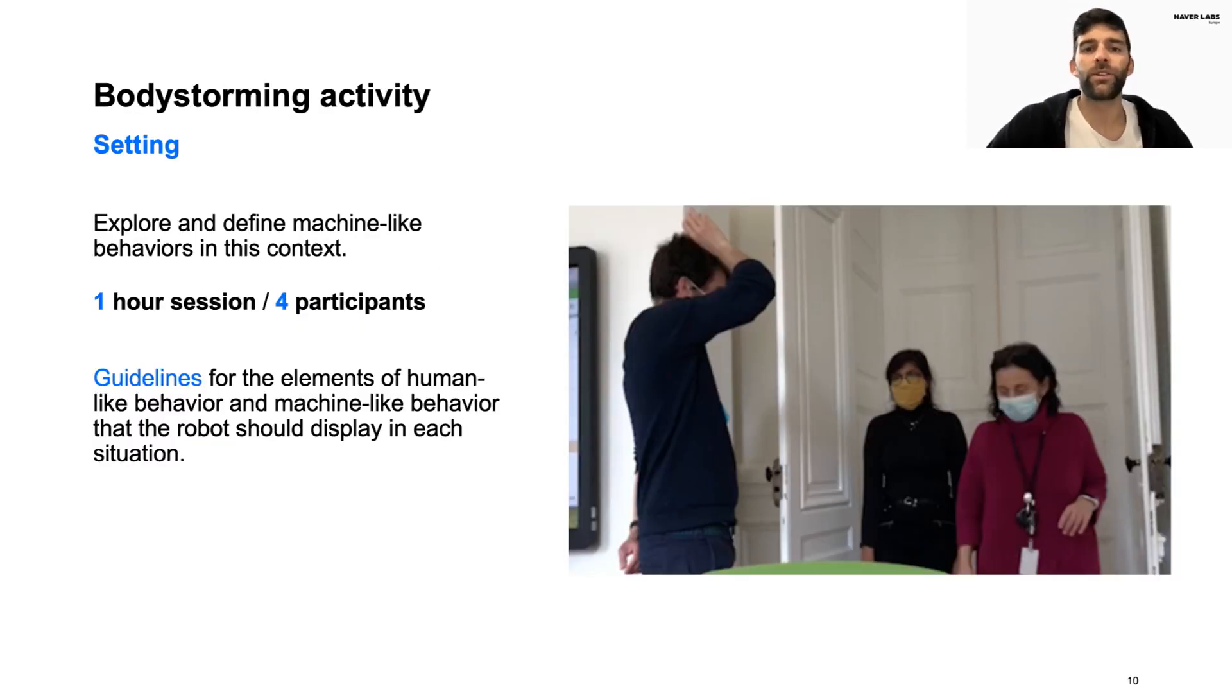We conducted a body-storming session in order to explore our approach and define how machine-like behaviors would look like in this context. The session lasted one hour and included four researchers involved in the project. Inspired by the situations observed during the ethnographic study, we simulated the elevator use and one person at a time took the role of the robot, first enacting a human-like behavior, then discussing what was not feasible with our robotic platform or what was not considered comfortable.